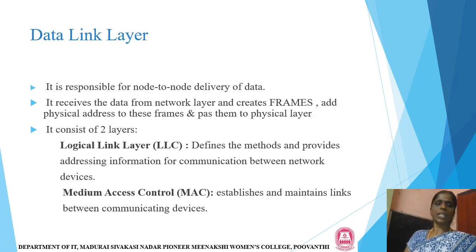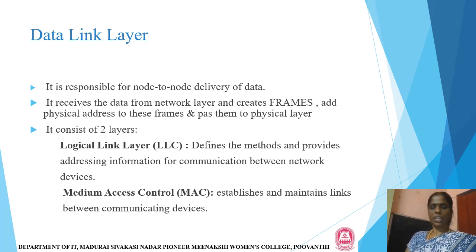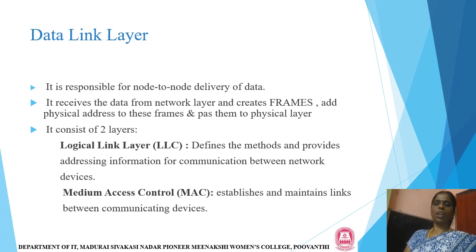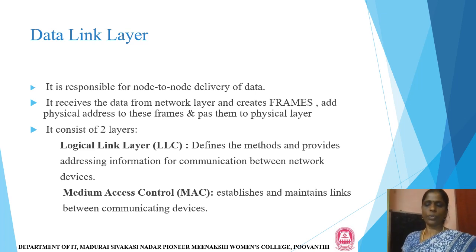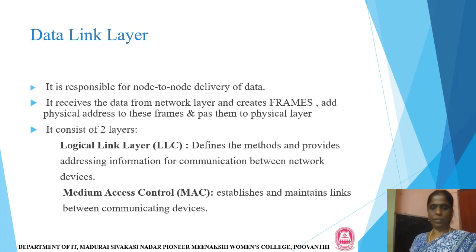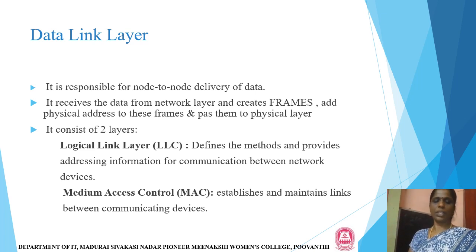The data link layer is responsible for node-to-node delivery of data. It receives data from the network layer, creates frames, adds physical addresses to these frames, and passes them to the physical layer. It consists of two sublayers: the logical link layer and the medium access control (MAC) layer. The logical link layer defines methods and provides address information for communication between two devices. The MAC layer establishes and maintains the link between communicating devices.